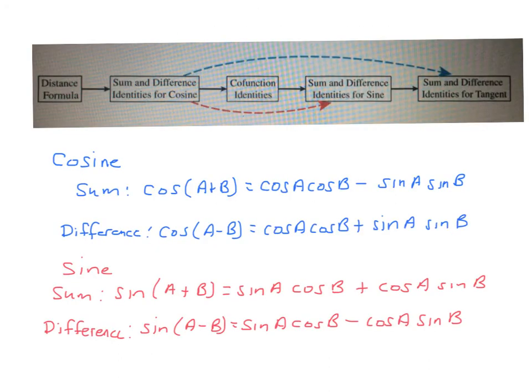The basis of these sum and difference identities comes from the distance formula, which you can see in this illustration — this is an illustration in your book. With the distance formula we get the sum and difference identities for cosine, and then through those and the co-function identities we get the identities for sine, and when you put both together we get the identities for tangent. The proofs and development of these are in section 6-2; I'm not going to go through the proof here.